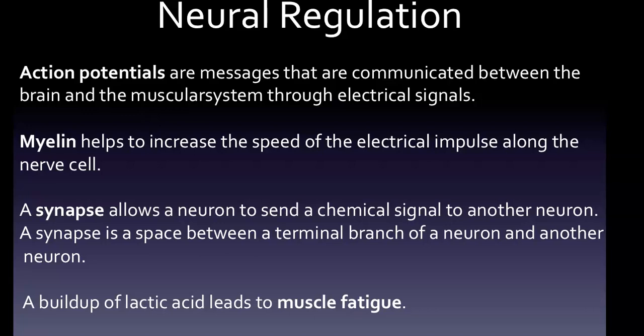Action potentials travel along the axon. Myelin helps to increase the speed of the electrical impulse along the nerve cell. Multiple sclerosis, which is a demyelinating disorder, prevents these impulses from being transferred effectively — that was also one of our questions. A synapse allows a neuron to send a chemical signal to another neuron; it is the space between a terminal branch of a neuron and another neuron. A neurotransmitter such as dopamine is released at the synapse.